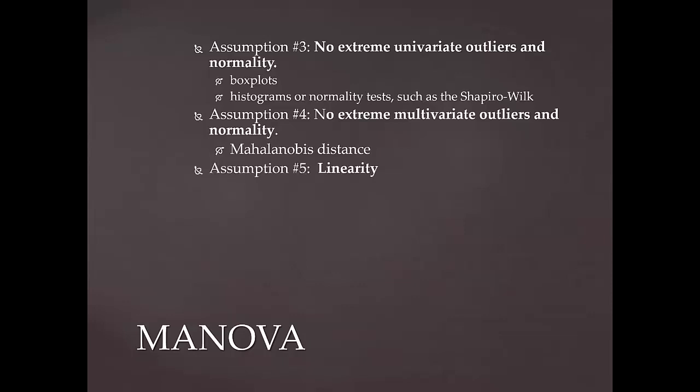Assumption 5 is linearity — that there is a linear relationship between the dependent variables for each group of the independent variable. This is examined by using a scatterplot or scatterplot matrices. The presence of a straight line on the scatterplot indicates that linearity can be assumed. However, a curvilinear line that curves on the scatterplot would indicate that this assumption is not tenable.